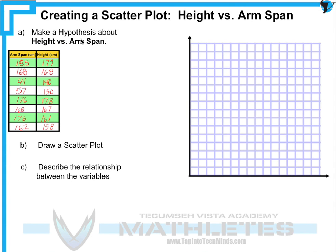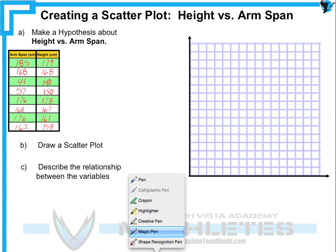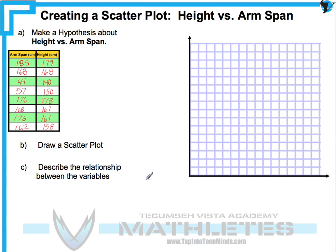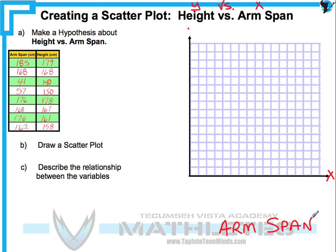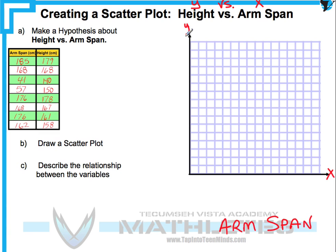Those are eight students with all of their arm spans and heights in centimeters. A quick note for those who missed class: the title of a scatter plot always starts with y versus the x variable. Since the x-axis is horizontal, this is going to be arm span, and the y-axis is going to be height.